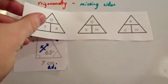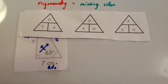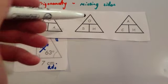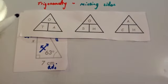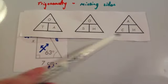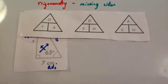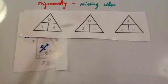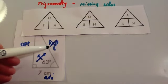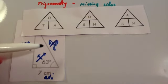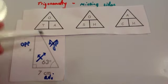Next, draw your SOH CAH TOA triangles. The mnemonic is: 'Two old angels skipped over heaven carrying a harp.' Whenever you're just beginning to use these trigonometry questions, I would draw all of them. As you get better, you'll be able to select which one you want straight away. Notice we've crossed off the hypotenuse, so we don't want any triangle that's got an H in it.